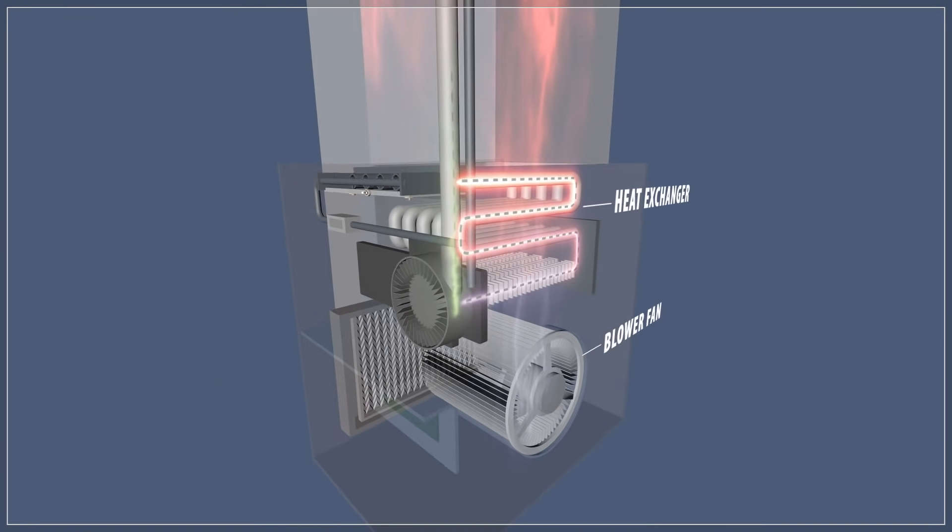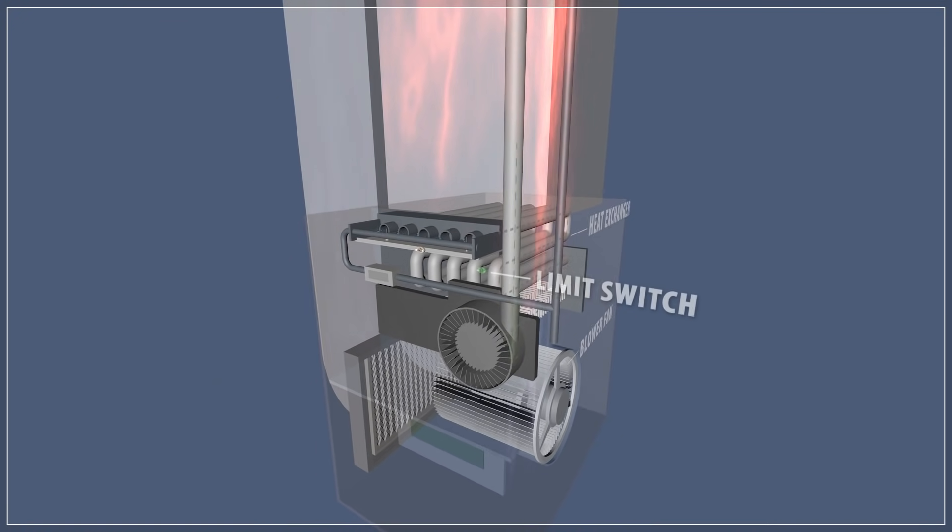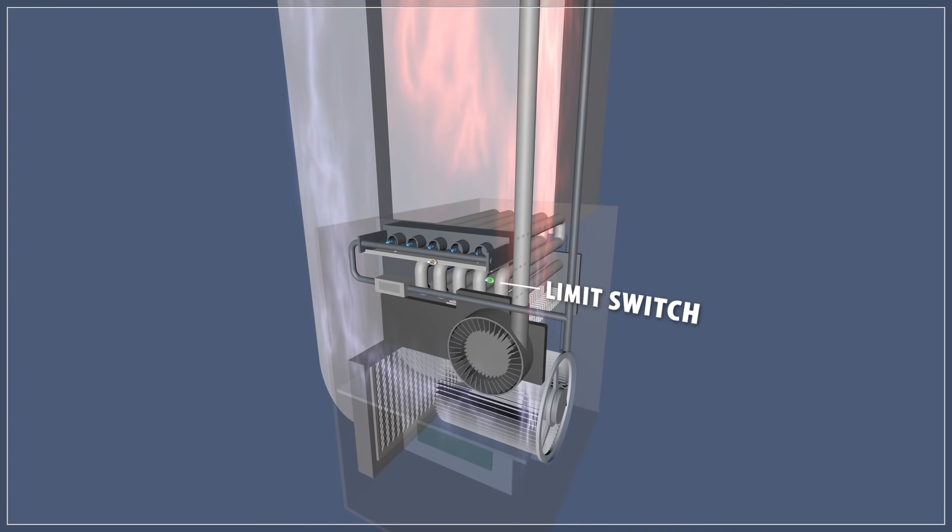Now even if a limit switch has continuity, it doesn't always mean that it's functioning correctly. Sometimes limit switches can start cutting out early and might prematurely shut down the furnace.